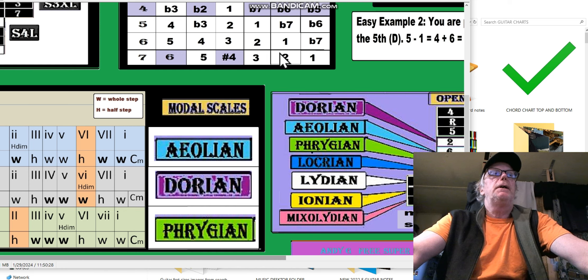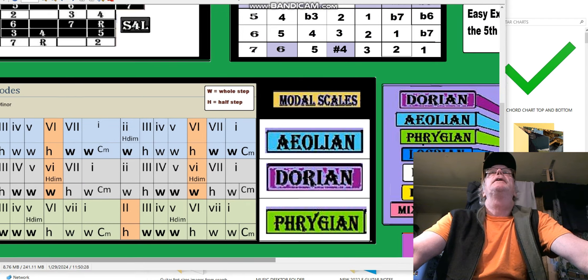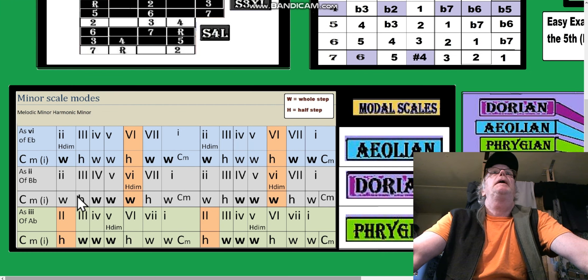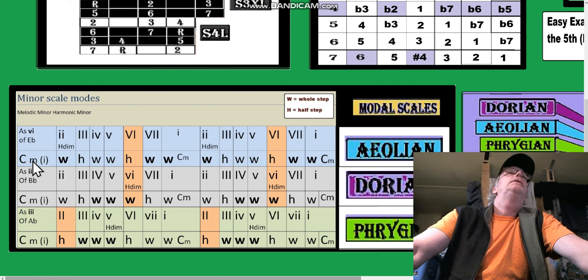So we got these three minors here. I don't want you to worry about my computer browser thing, you know, where my stuff is. So none of that confuse you. C minor - we got C minor as the sixth of E flat.